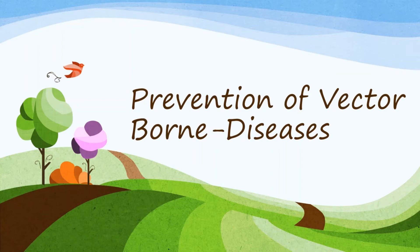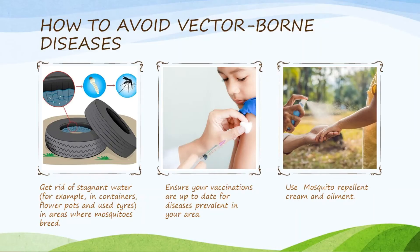Prevention of Vector-Borne Diseases: How to Avoid Vector-Borne Diseases. Get rid of stagnant water, for example in containers, flower pots, and used tires, in areas where mosquitoes breed.